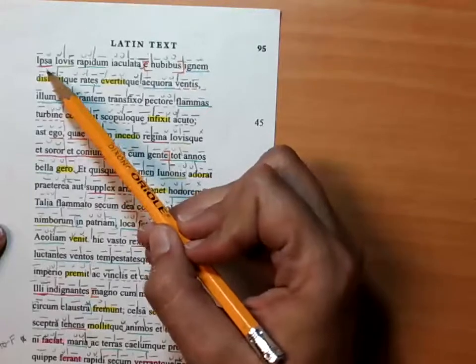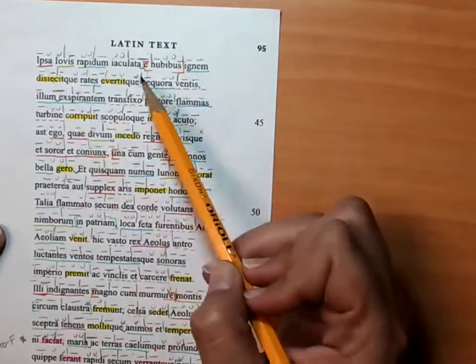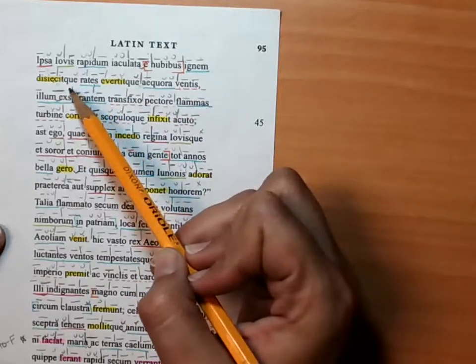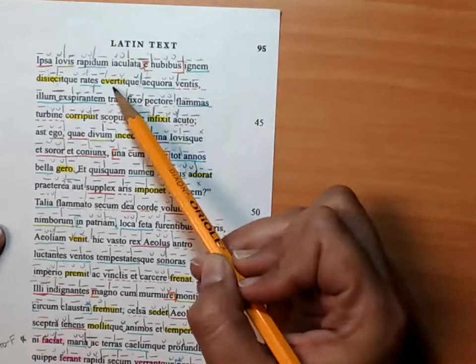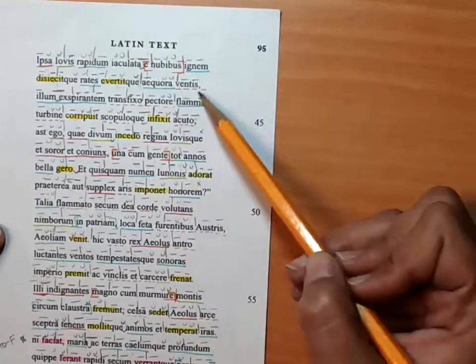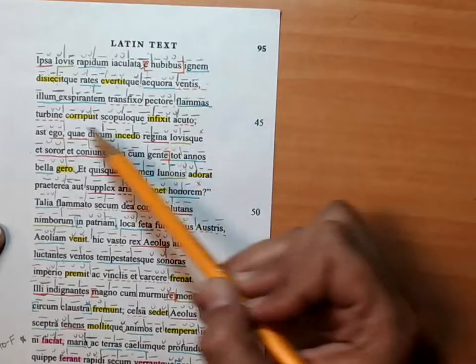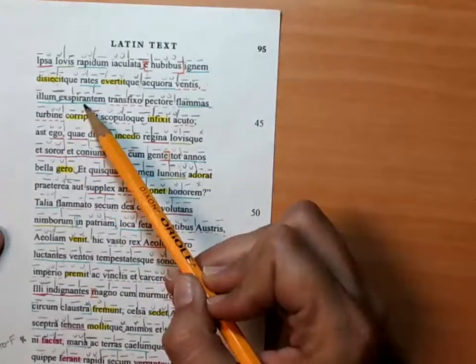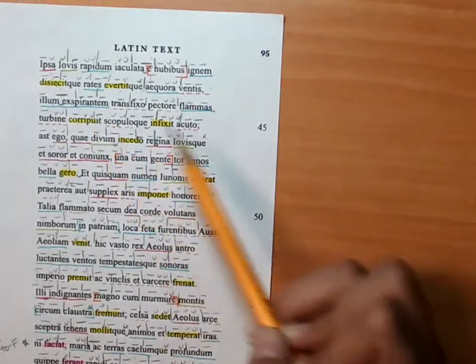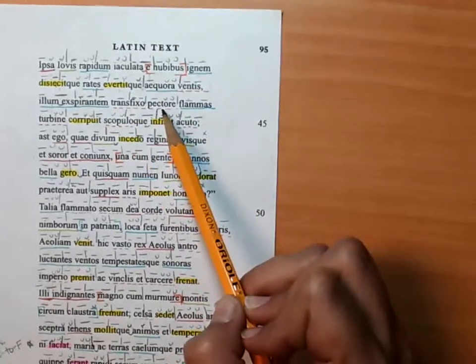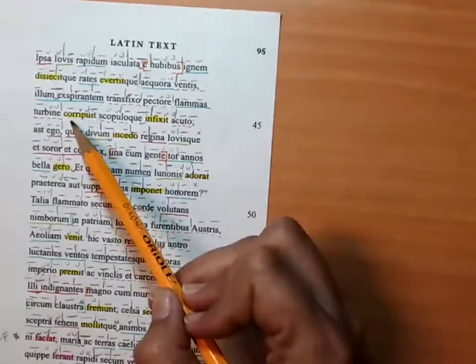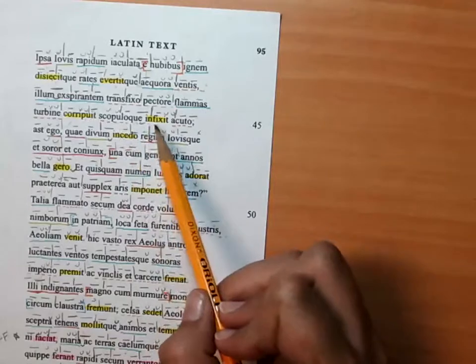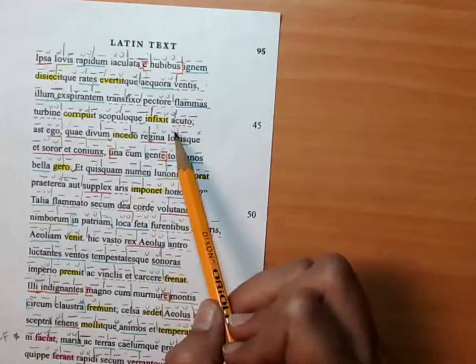She herself, having hurled the rapid fire of Jove from the clouds, scattered the boats and overturned the seas by means of the winds. She snatched up that man breathing out flames from his pierced chest. She snatched him up by means of a whirlpool and fixed him on a sharp rock.